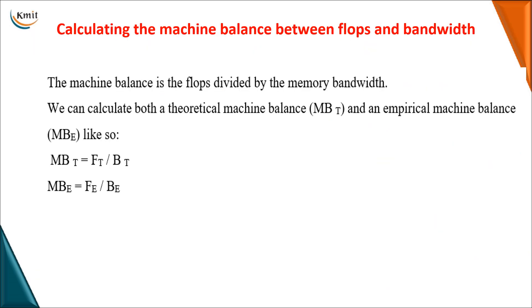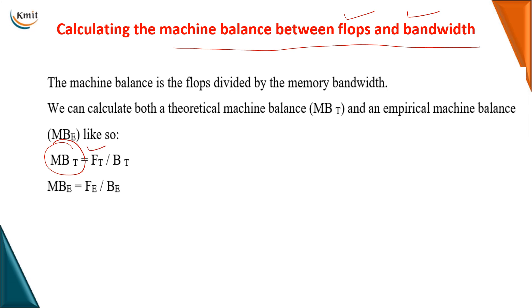Having seen both theoretical and empirical calculations, we go for determining machine balance between FLOPs and bandwidth. Machine balance is calculated as: theoretically — FLOPs (calculated theoretically) divided by bandwidth; empirically — FLOPs divided by bandwidth. We will cover the next topic in the next class.